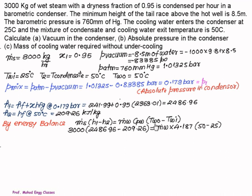If we take the energy balance we have heat rejected by steam equals heat gain by cold water. Heat rejected by steam is given by m_dot_s*(H1 - H2). Heat gain by water is given by mass of water multiplied by specific heat and the temperature difference of water. Mass of steam is 3000, H1 is 2486.96, H2 is 209.26. Mass of water we need to calculate. CP of water is the standard value 4.187.